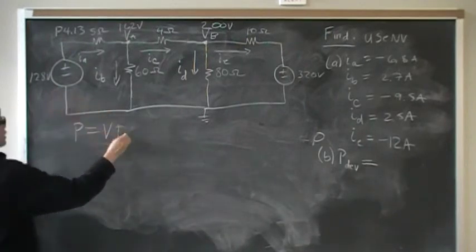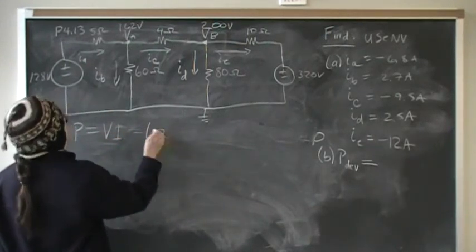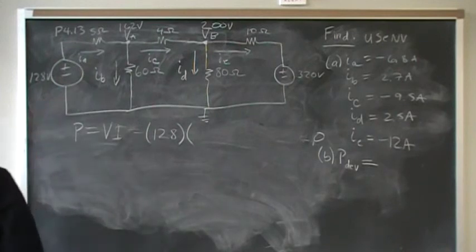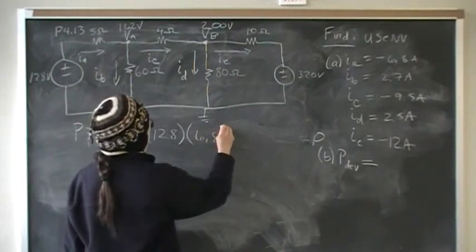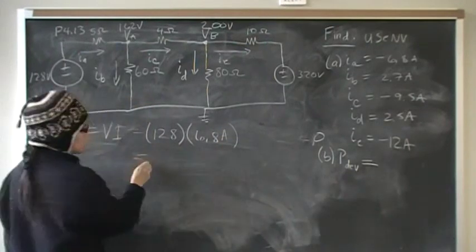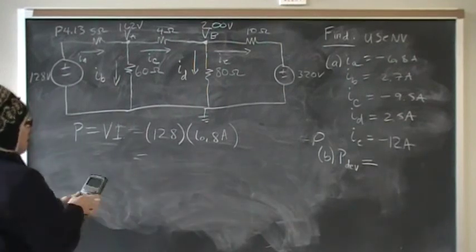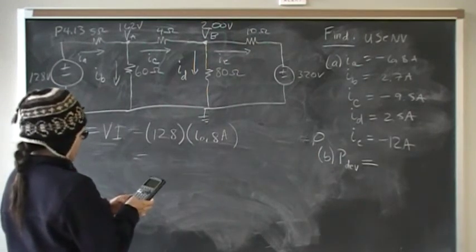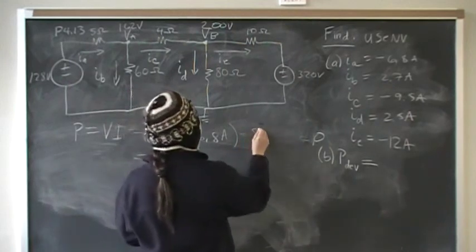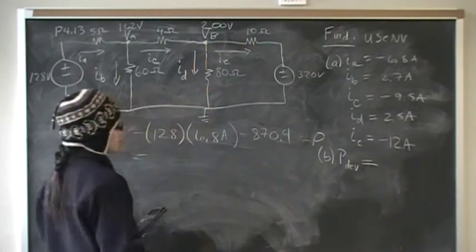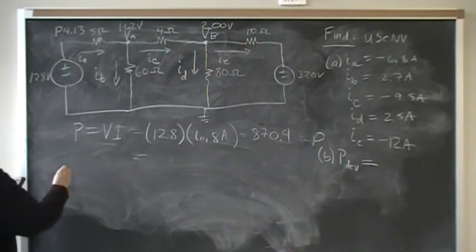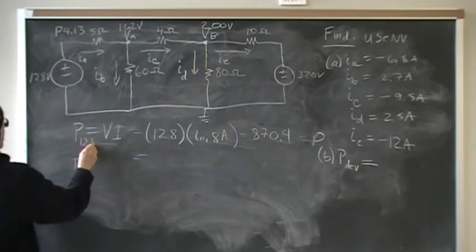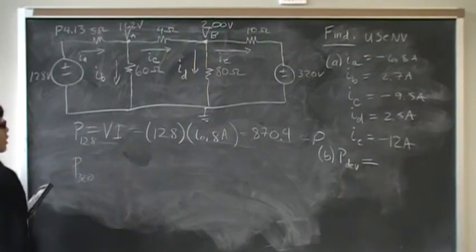So the current. We know that the voltage here is 128, but what is the sign of the current? We have the current leaving the positive node by the passive sign convention. That's positive current. So we have 6.8 amps, which gives me 128 times 6.8, 870 watts being consumed, being absorbed by this circuit. The second one is, we have P of 320. This is the power of the 128 volt, and we know that that's going to consume 870 watts.